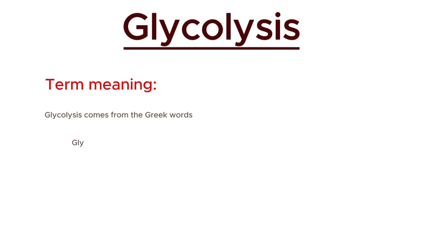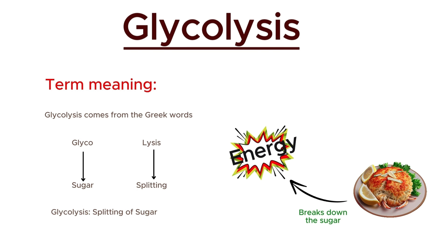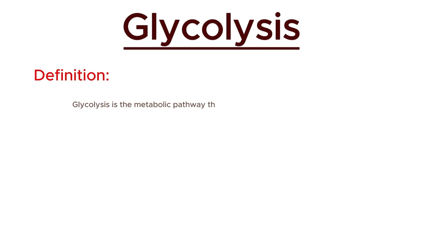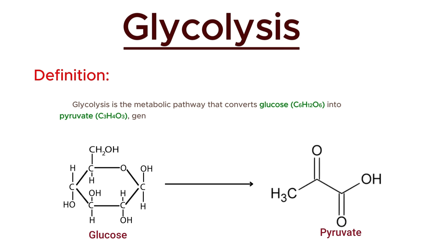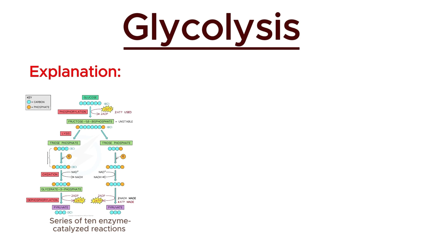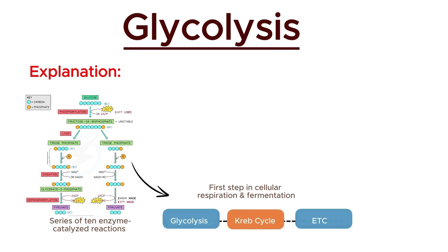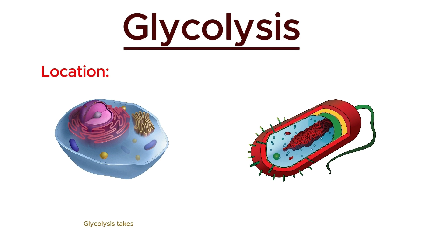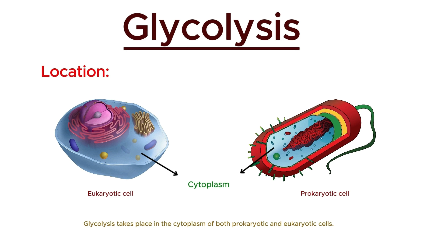Glycolysis comes from the Greek words glyco and lysis, where glyco means sugar and lysis means splitting. Thus, glycolysis refers to the splitting of sugar. This process breaks down the sugar we consume into energy, supporting various cellular processes. Formally, glycolysis is defined as the metabolic pathway that converts glucose into pyruvate, generating small amounts of ATP and NADH in the process. Glycolysis is a series of 10 enzyme-catalyzed reactions and is the first step in cellular respiration and fermentation. This process is anaerobic, meaning it does not require oxygen. It takes place in the cytoplasm of both prokaryotic and eukaryotic cells.